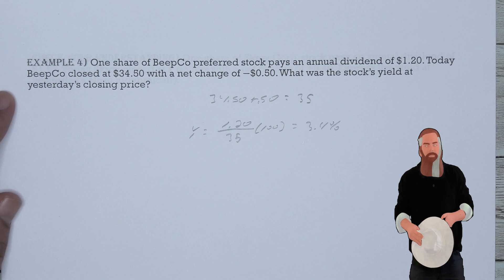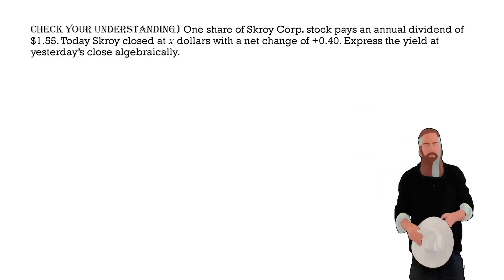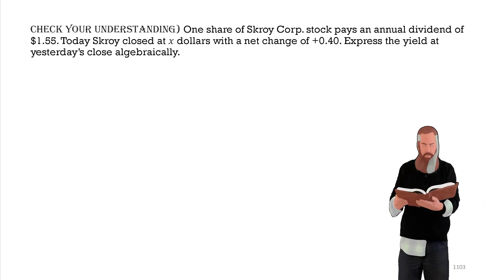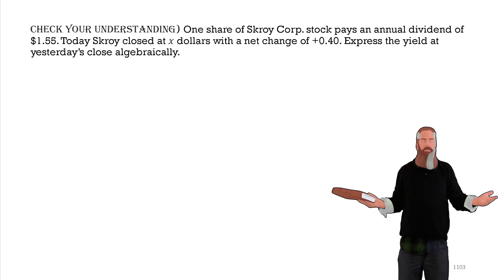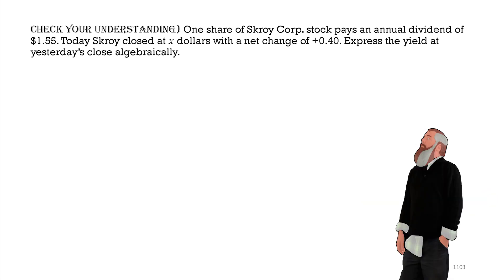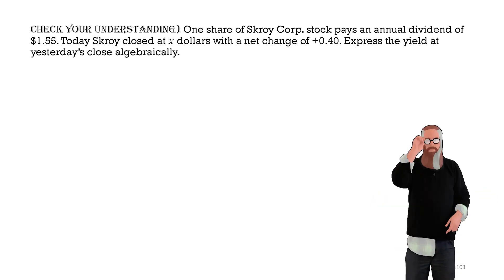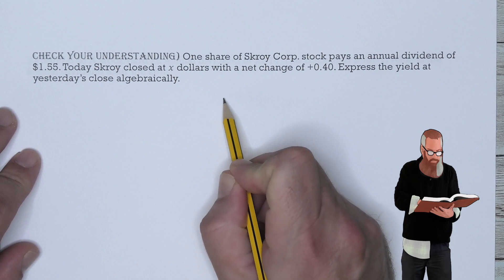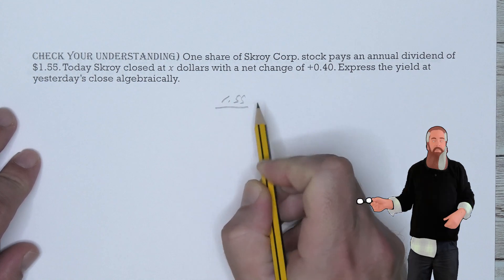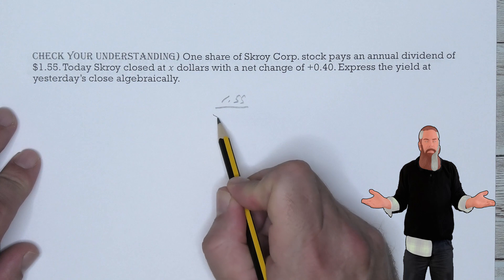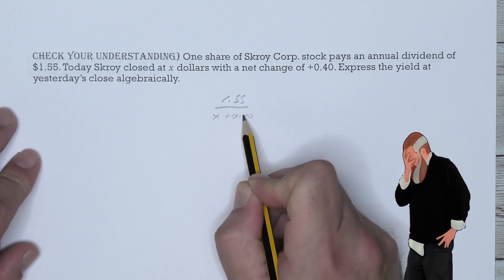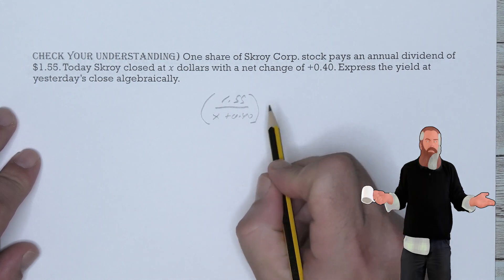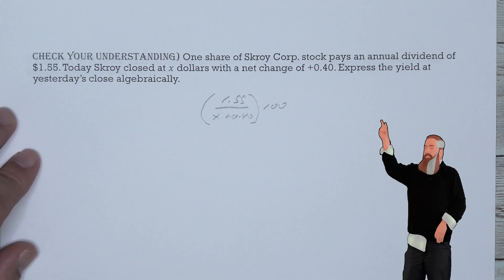Let's check our understanding. One share of ScroiCore stock pays an annual dividend of $1.55. Today, ScroiCore closed at X dollars with a net change of up 40 cents. Express the yield at yesterday's close algebraically. The dividend of $1.55 is divided by yesterday's closing price, which was (X + $0.40). Multiply by 100 to express as a percent: the yield is ($1.55 / (X + 0.40)) × 100.